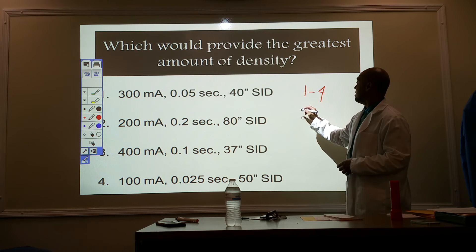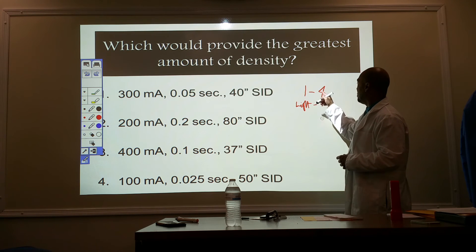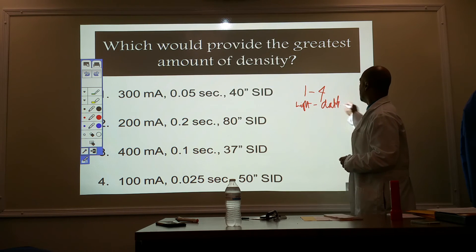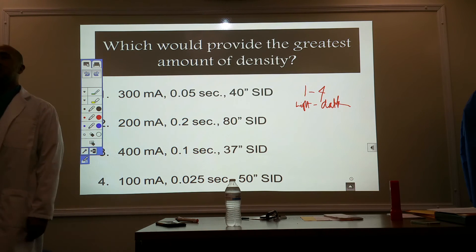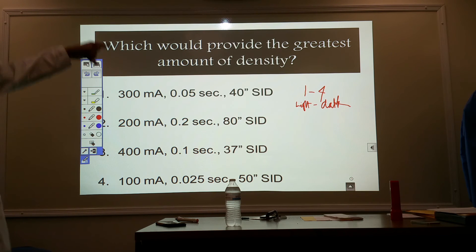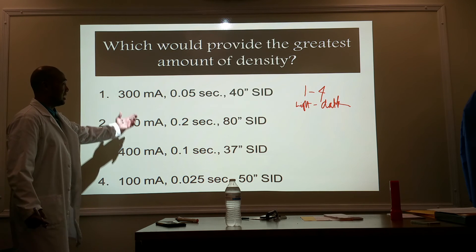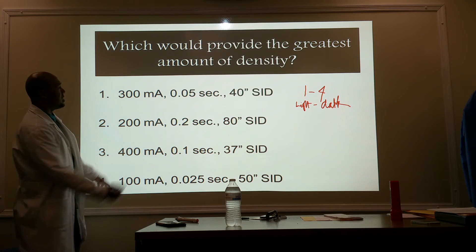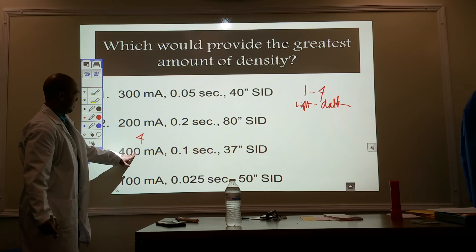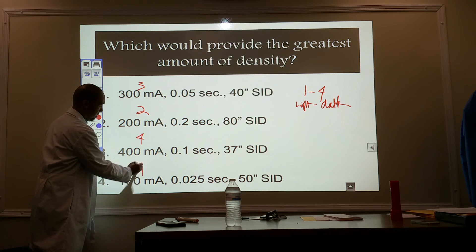All right? One being the worst, or in this case, let's do the lightest. Two, four being the darkest. The most, the most dense. All right? What do we know about mA? High mA or low mA is going to give us increased density. High mA. Does everybody agree? High mA. So, let's do this. Which is the highest mA? 400. Three. So, let's do what? Number three. Number three. So, there's four, three, two, and one. Do we all agree?